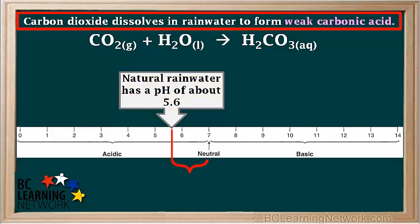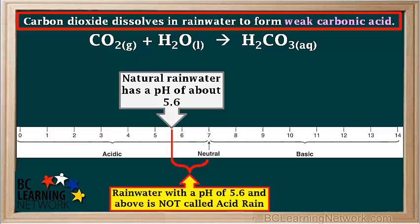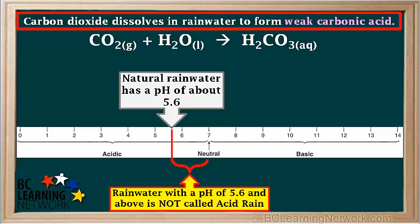Because the pH of rainwater can be as low as 5.6 due to natural causes, rainwater with a pH between 5.6 and 7, although acidic, is not called acid rain or acid precipitation. But rainwater with a pH lower than 5.6, caused by human activity, volcanoes, or lightning, is officially called acid rain or acid precipitation.